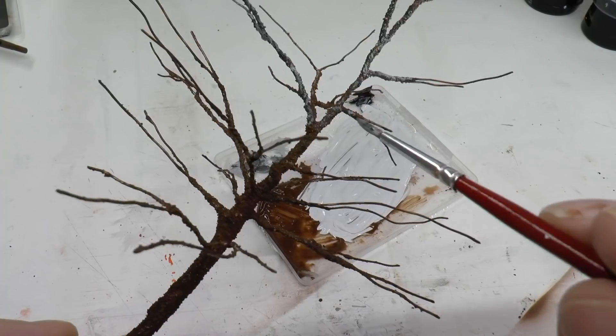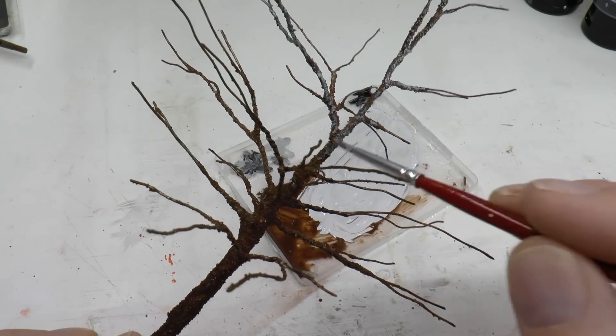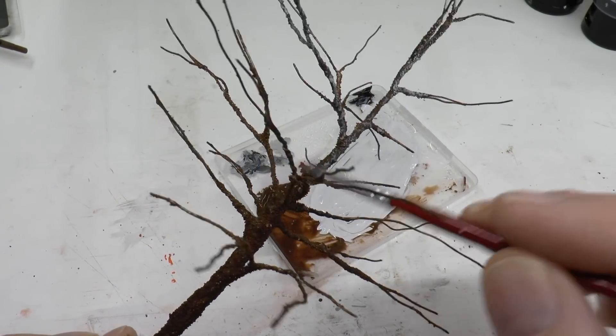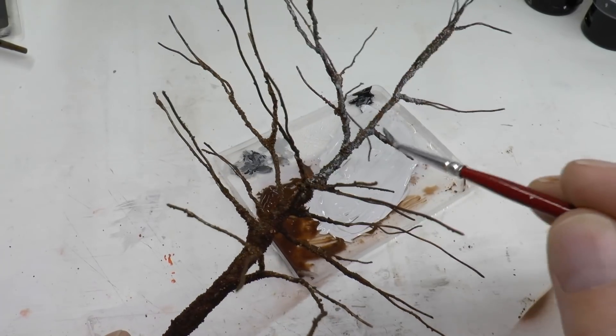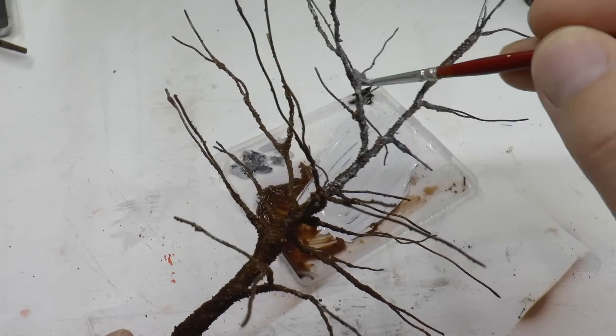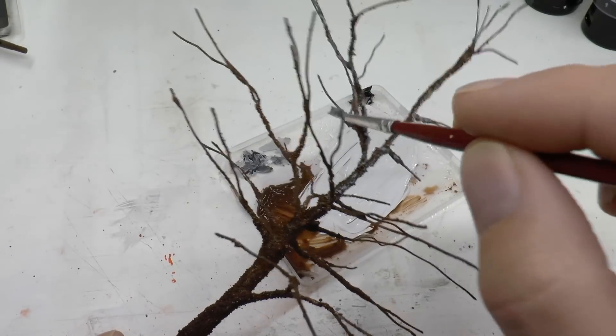Next thing is to give it a bit of detail. I do that by dabbing on a blackish gray onto both branches and the upper part of the trunk.